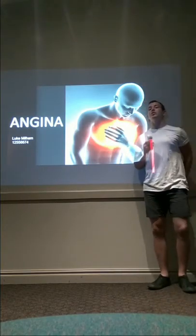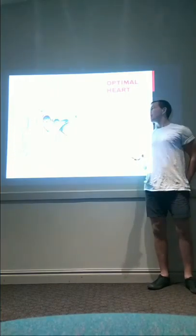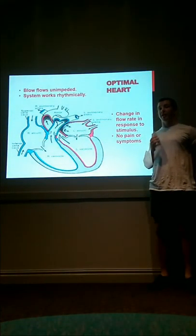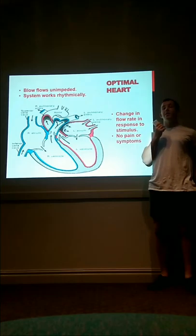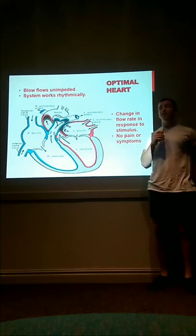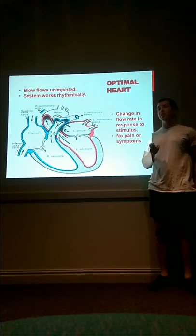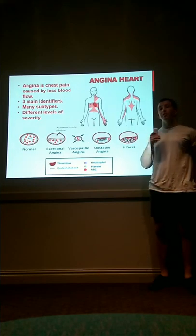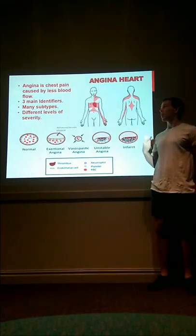Hello, my name is Luke Millam and I'm going to talk to you today about angina. Now we all know how a healthy heart functions. Blood flows from the right atrium to the right ventricle, out to the lungs where carbon dioxide is exchanged for oxygen, flows back into the heart, left atrium to the left ventricle and out the aorta to the body's tissues. Now one of the tissues that the body flows to is in fact itself, and this is where angina occurs.